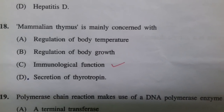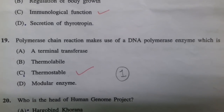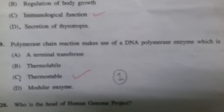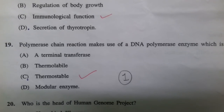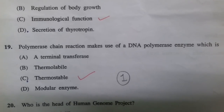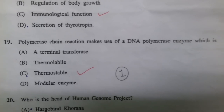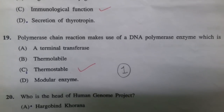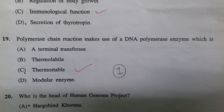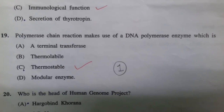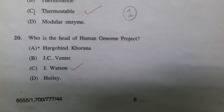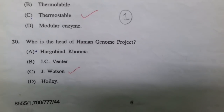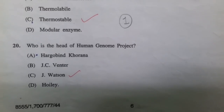You should identify which section of zoology each question comes from. The polymerase chain reaction (PCR) was the easiest question in this paper. PCR makes use of a thermostable DNA polymerase enzyme — option C was the correct answer. The head of the Human Genome Project was James Watson.